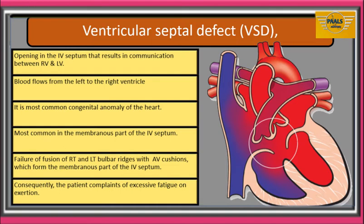VSD is caused by failure of fusion of the right and left bulges with the AV cushions, which form the membranous part of the interventricular septum. As a result of the left to right shunting of blood, the output from the left ventricle is reduced. Consequently, the patient complains of excessive fatigue on exertion.